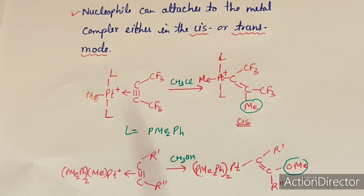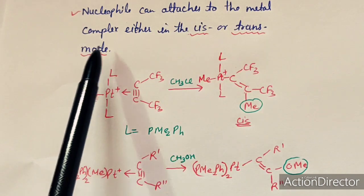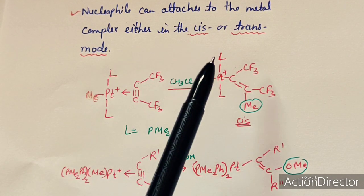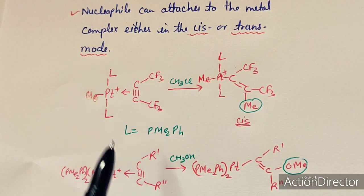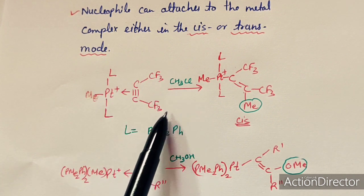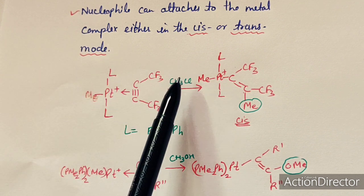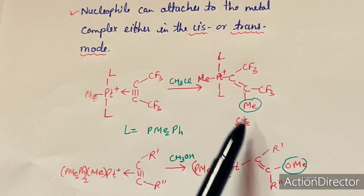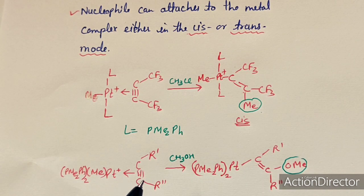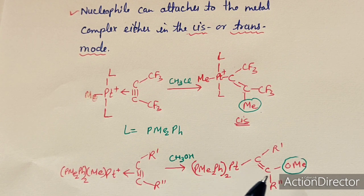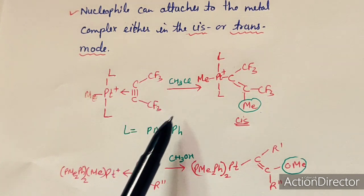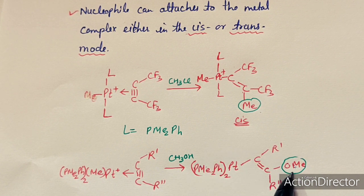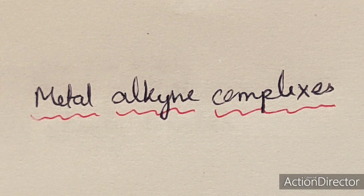The nucleophile can attach to the metal complex either through cis or trans position. In one example, a metal alkyne complex with methyl group and L ligands (L = PMe2Ph) undergoes cis addition — the methyl group is added to the cis position of the metal center. In another reaction with the same type of compound, OMe is added in trans mode — so nucleophilic attack can occur via either cis or trans attachment mode.